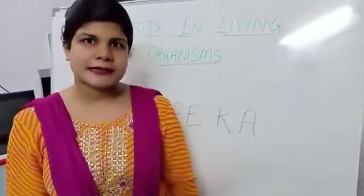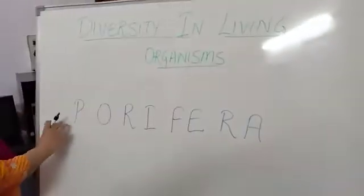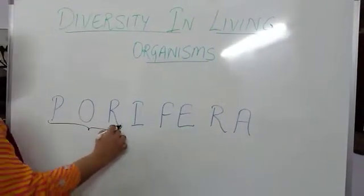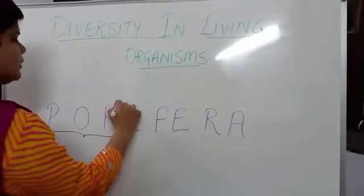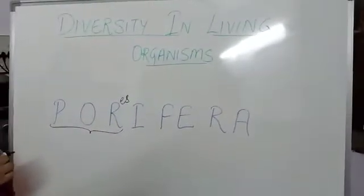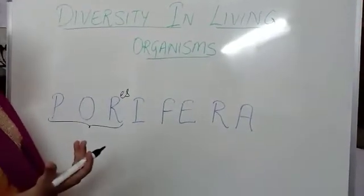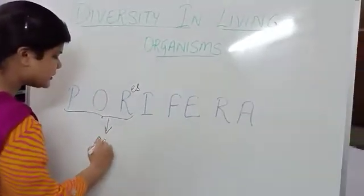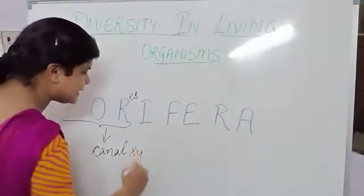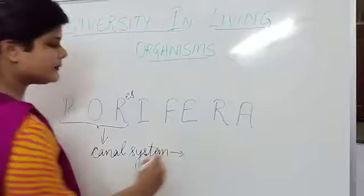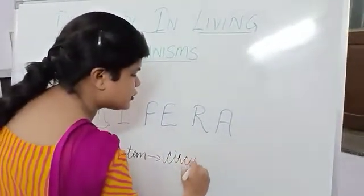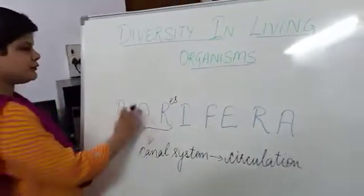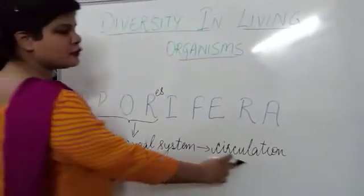So let's begin with the first phylum, that is Porifera. In the word Porifera, we have the first three alphabets P-O-R. These three alphabets tell us that the body of Porifera is made up of pores — meaning holes. These bodies made up of pores or holes make up a special system known as the canal system in Porifera, and this canal system helps in the circulation of food and water inside the body of Porifera.